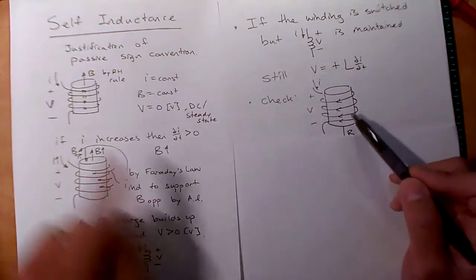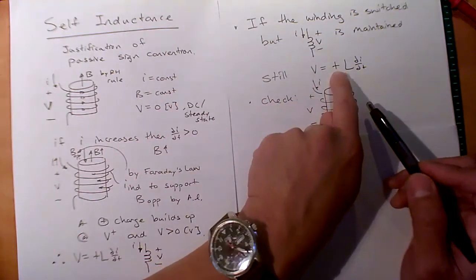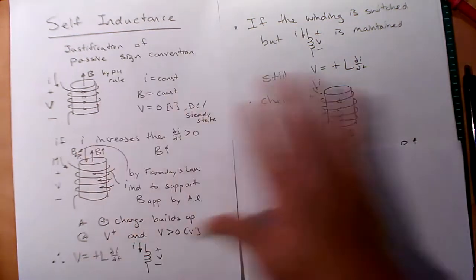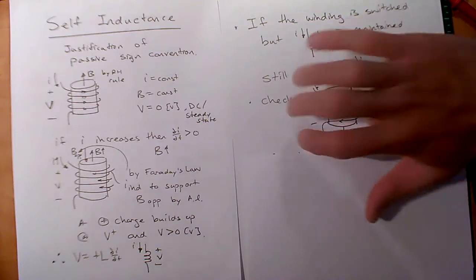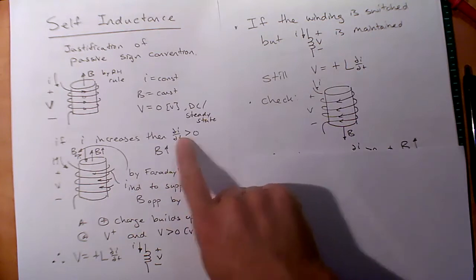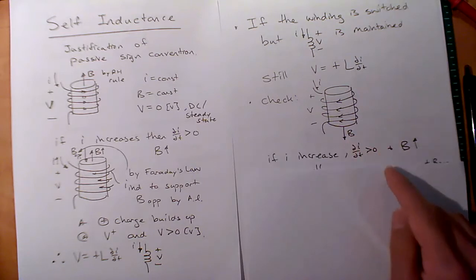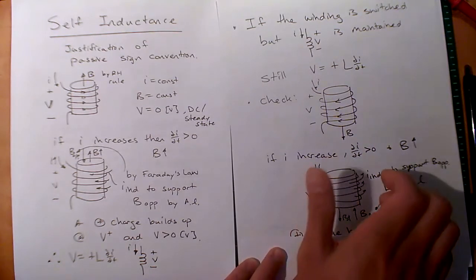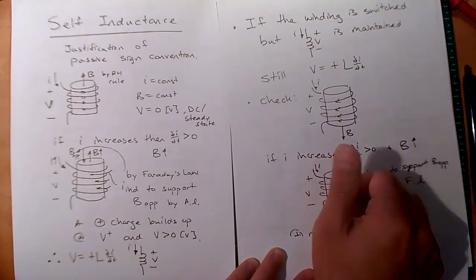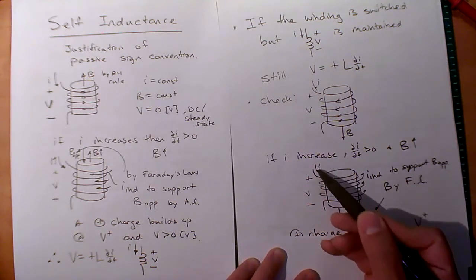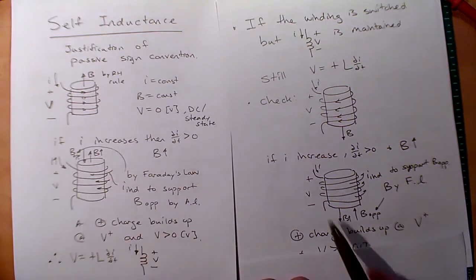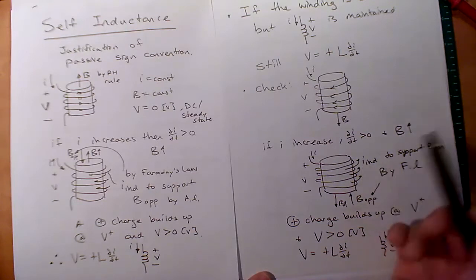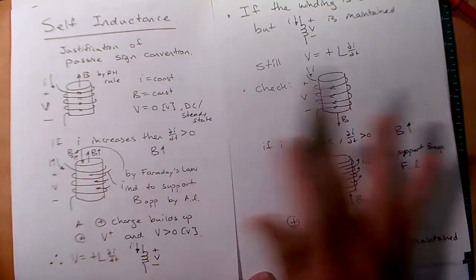In this case, current is still going down into the positive terminal. With the reversed winding, B goes down. If we increase the current to get a positive dI/dt, B tries to get bigger, so you get a B_opposed to fight it, and an I_induced to support that B_opposed via Ampere's law. It creates a current that spirals around, again fighting the initial I. You get positive charge buildup there. So you still have V greater than zero — a double negative where B_opposed goes one way but I_induced goes the other, maintaining consistency.